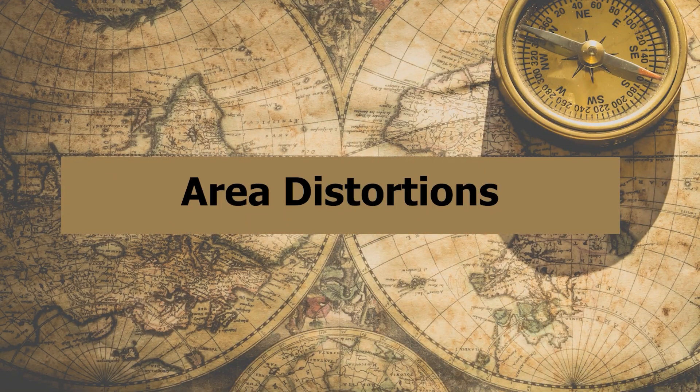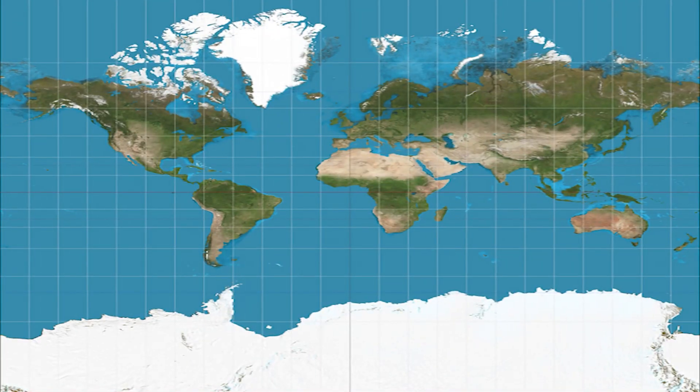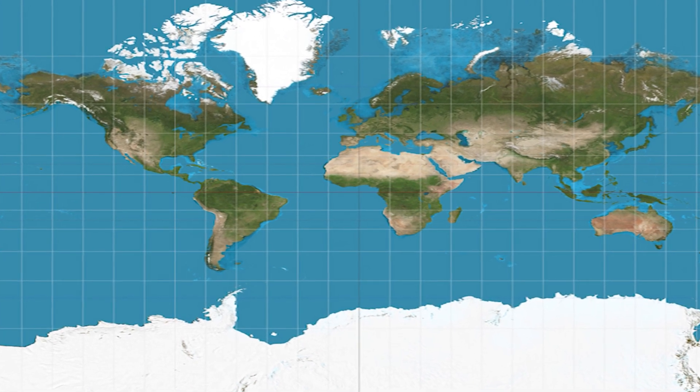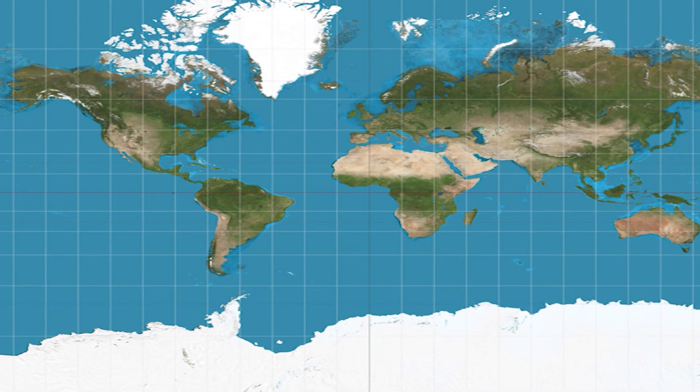Let's now discuss the area distortions. On our map, Africa appears significantly smaller than the United States. However, it is larger than the United States,